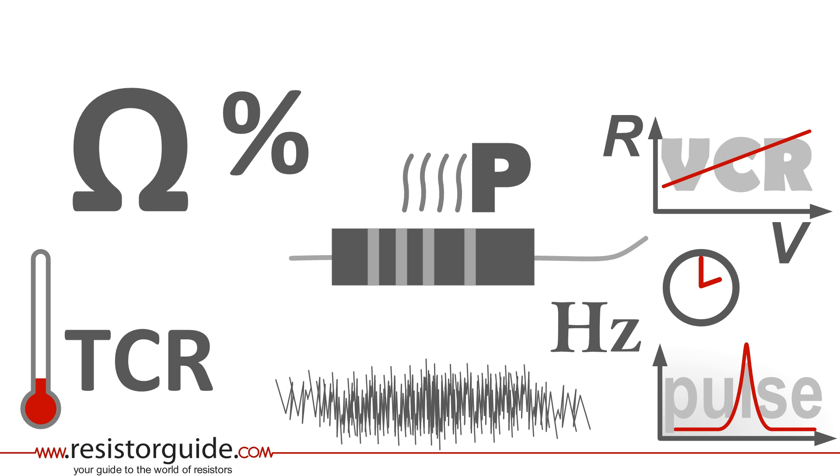Physical size and mounting characteristics. The size is more or less defined by the voltage and the power, but also by the mounting limitations. Here an axial leaded resistor is shown, but also SMD resistors could be specified.